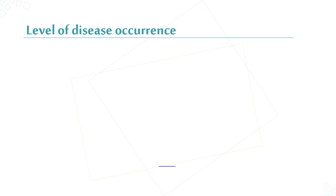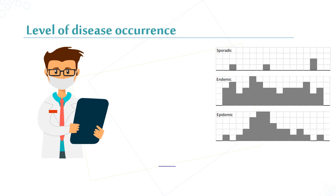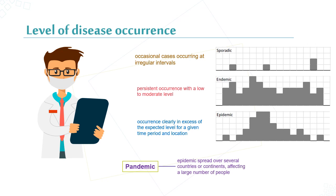Levels of disease occurrence include: sporadic — occasional cases occurring at irregular intervals; endemic — persistent occurrence with a low to moderate level; epidemic — occurrence clearly in excess of the expected level for a given time period and location; and pandemic — spread over several countries affecting a large number of people, like COVID-19.